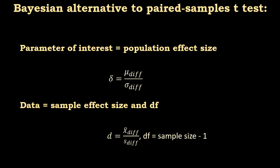The last Bayesian alternative to t-tests is the paired-samples t-test or the Bayesian alternative of that. So let's start with the parameter of interest. It is the population effect size, it is called delta, but the way we calculate it is different.